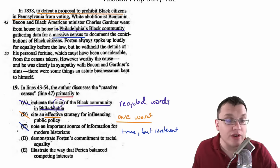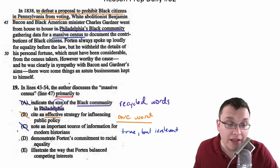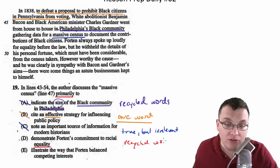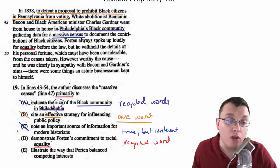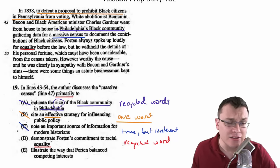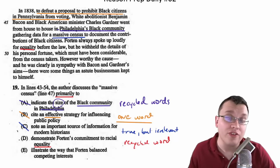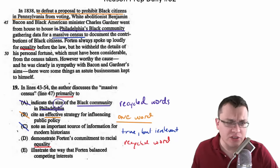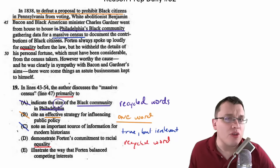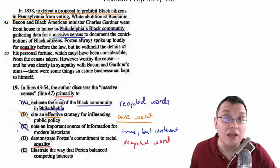Choice D: demonstrate Fortin's commitment to racial equality. Again, like in A, we have a recycled word being used. They mention 'Fortin always spoke up loudly for equality before the law' — 'demonstrate Fortin's commitment to racial equality' seems to connect. But when you get really into the details, D doesn't capture the whole of what this paragraph or the discussion of the census is trying to do. Sure, Fortin is all for equality before the law, but is that really why the author brought up the census, or is there some deeper meaning, a deeper level to it? Yes, there is a deeper level to it. So we're going to get rid of D.